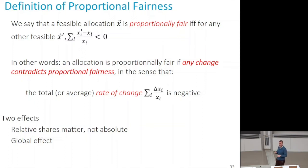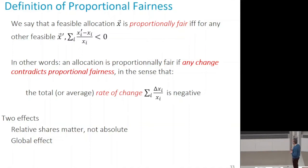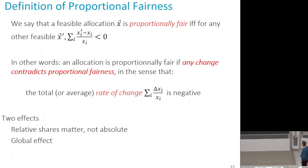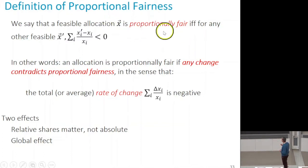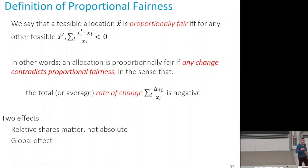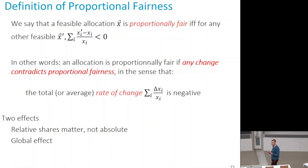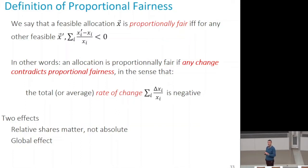There are essentially two definitions of fairness, and the internet plays somewhere in between. The axiomatic definition of proportional fairness is similar to max-min fair allocation, but uses relative values instead of absolute values — that is why it is called proportionally fair. The setting is the same: a vector x with positive allocations. An allocation is proportionally fair if any deviation x prime has a global balance that is negative, where the global balance is the sum of the relative changes.